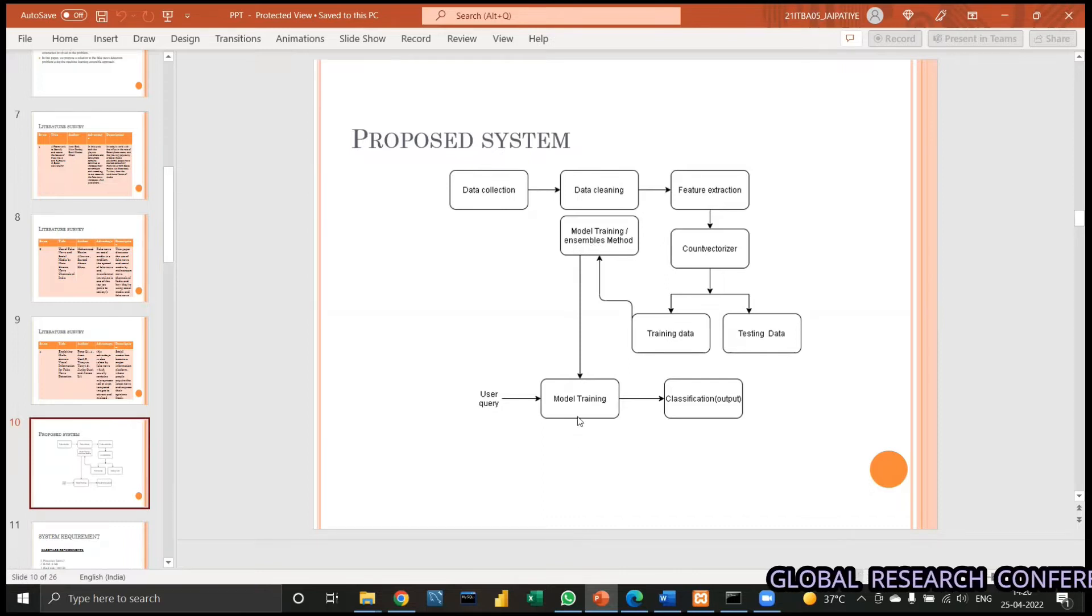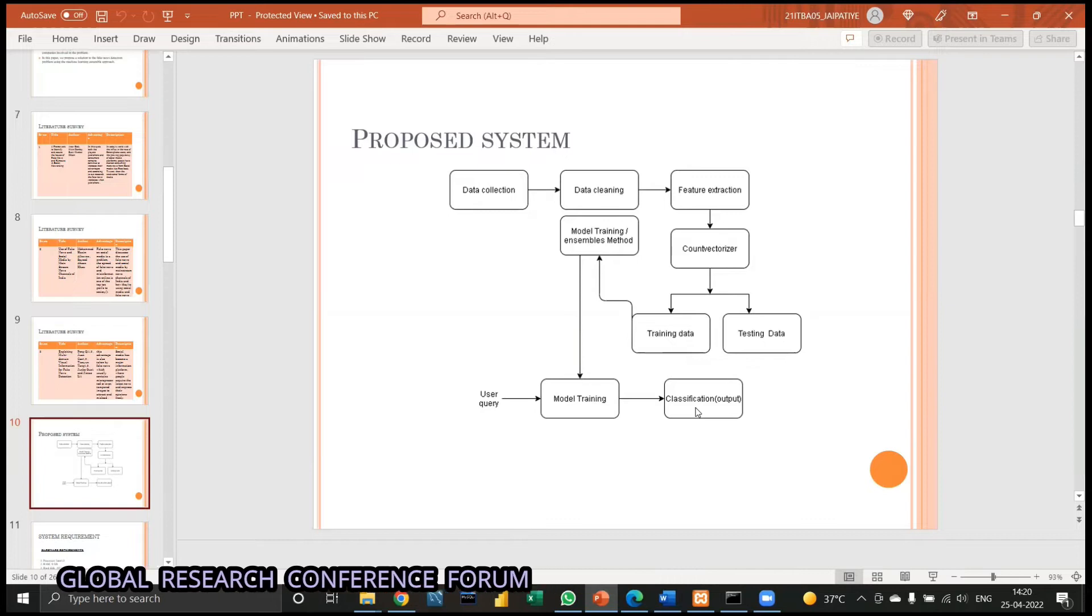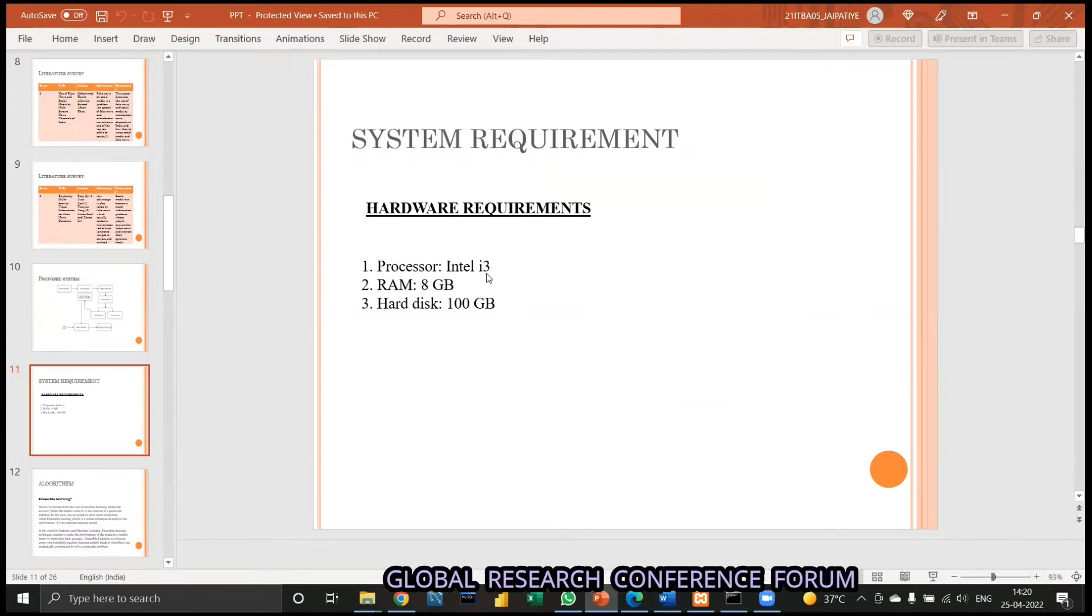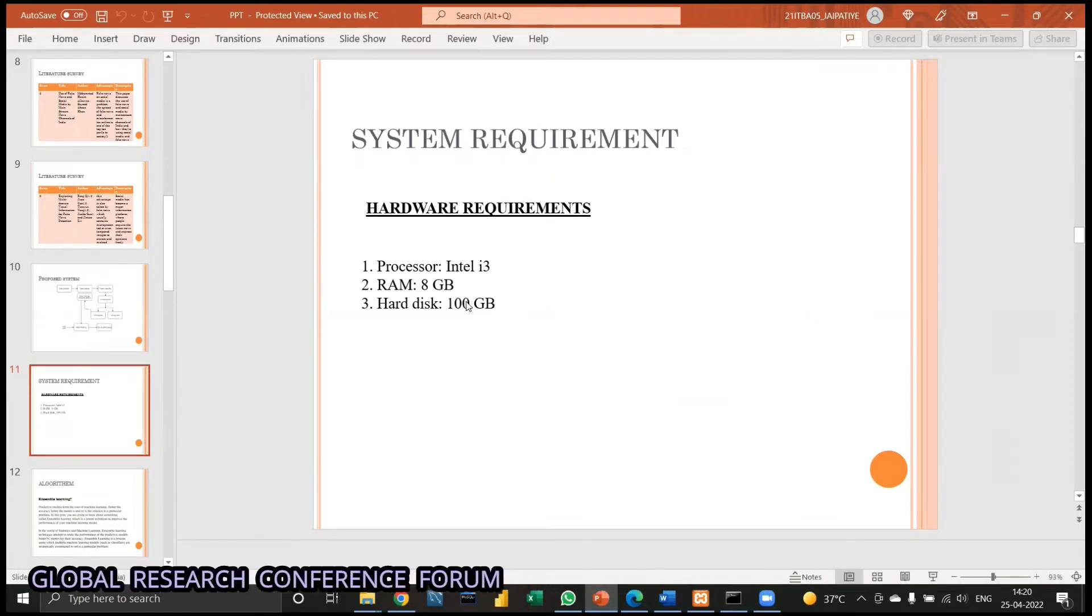After that, the model is trained. User query and classification - we get the classified result whether it is a fake news or it is not a fake news. System requirements for this thing is simple: we can do it on an Intel i3, 8GB RAM, and a hard disk of 100GB is enough.